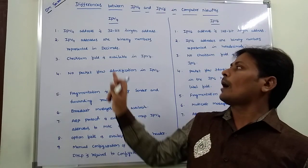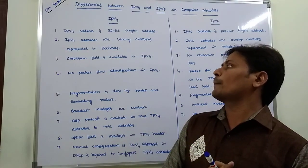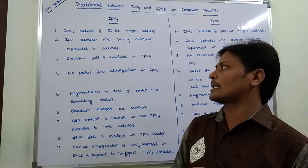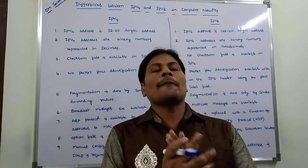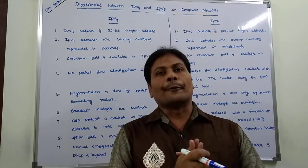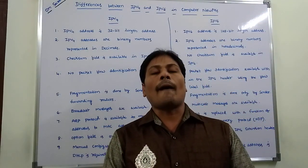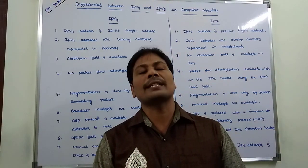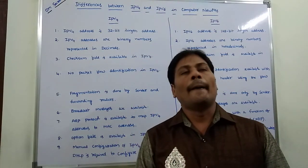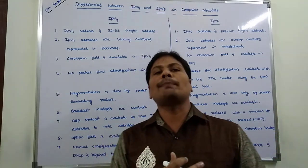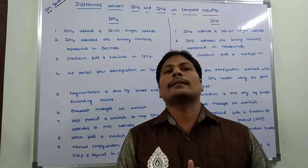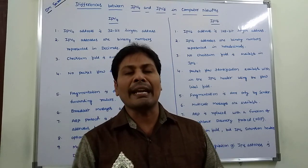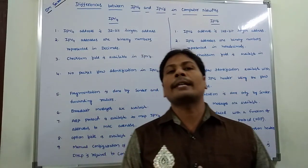Second point: IPv4 addresses are binary numbers represented in decimals. But in the case of IPv6, the addresses are binary numbers represented in hexadecimals.